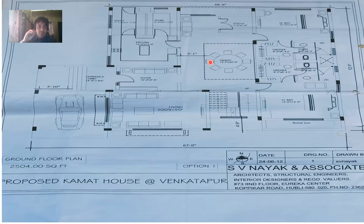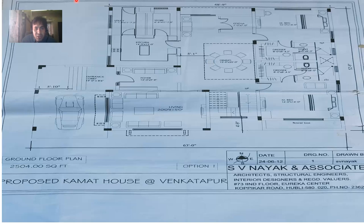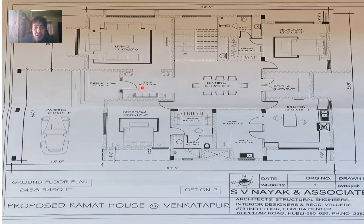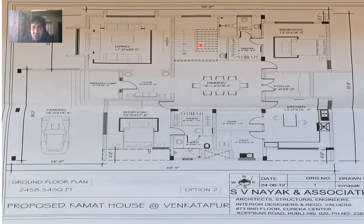When I release the drawing, I don't release just a single drawing. You may not like the first option, so I'll release two or three options. Option one was the plan we just saw. Option two has a different arrangement — the living room and bedroom positions are rearranged, the staircase is repositioned, and the master bedroom, puja room, kitchen, and utility area are in different locations. So this is option two.